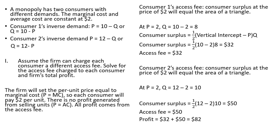The total profit here is going to be $82. It's just the sum of the access fee to consumer 1 plus the access fee to consumer 2. There is no profit generated from selling units to either consumer because price equals average cost.